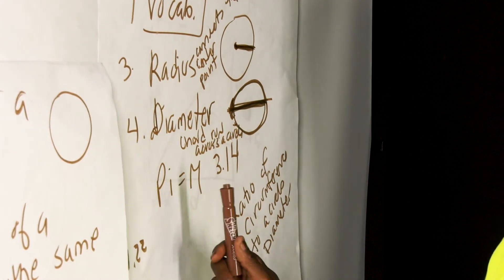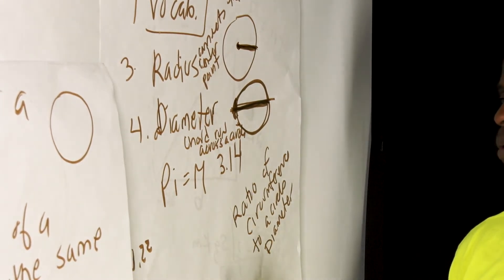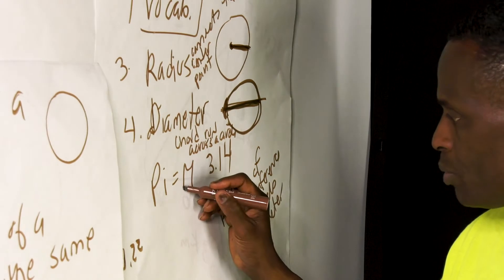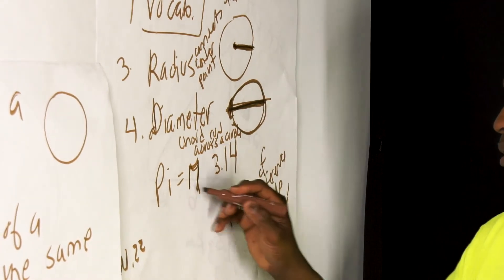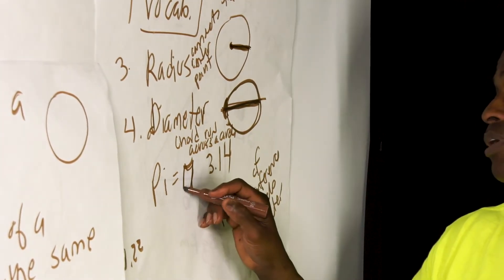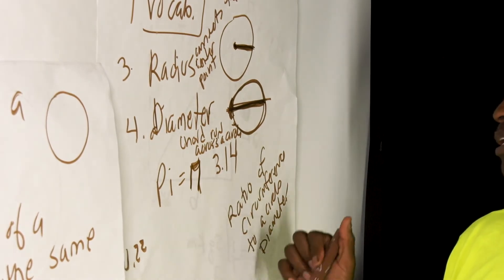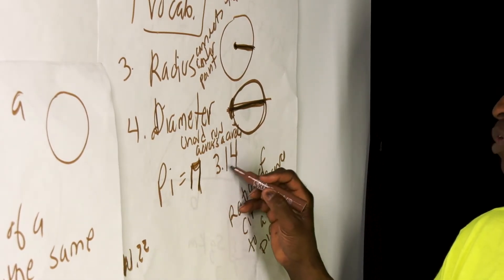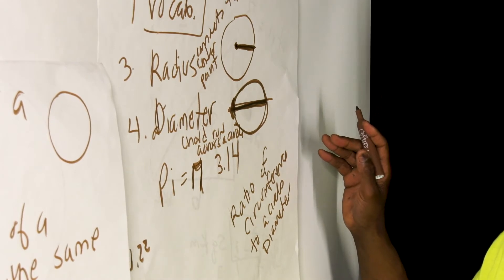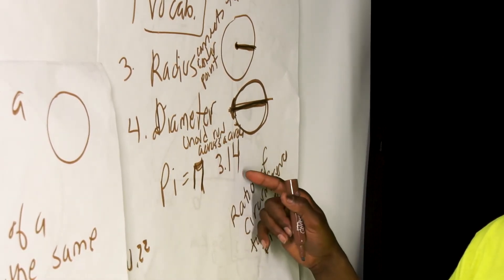Another term that comes into play is pi. And what does pi represent? We represent pi with this symbol. It looks kind of funny, but this symbol right here because it's a Greek letter, pi. But it represents this number, 3.14, which is actually a repeater. It goes on and we cut it off and we round it to the hundredth.